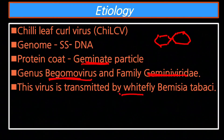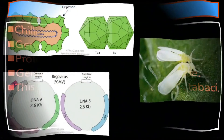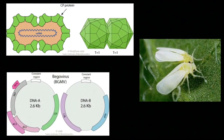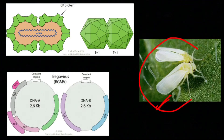This virus is transmitted by whitefly, Bemisia tabaci. यह whitefly से एक पौधे से दूसरे पौधे में फैलता है। यह है whitefly जो वायरस को एक पौधे से दूसरे पौधे में फैलाते हैं।